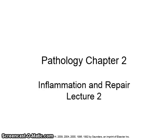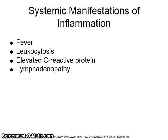Hello students, this is Pathology Chapter 2, Inflammation and Repair, Lecture 2. The systemic manifestations of inflammation are fever, leukocytosis, elevated C-reactive protein, and lymphadenopathy.